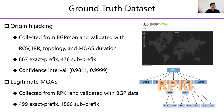We first build a ground truth dataset including origin hijacking and legitimate MOAS. We collect origin hijacking from BGP Mon and manually validate these events using four filters. For legitimate MOAS, we collect legitimate MOAS conflicts from RPKI but keep only those that also appear in BGP to avoid misconfigurations.